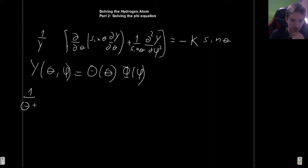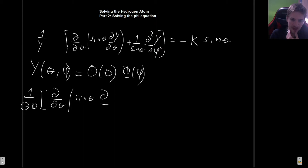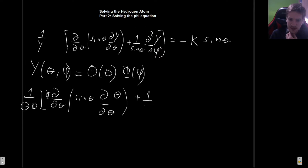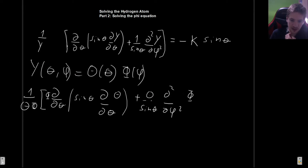So what we get is 1 divided by Theta·Phi — I'll leave the explicit dependence out to avoid cluttering the notation. The first term involves the derivative with respect to theta acting on Theta, since Phi does not depend on theta and can be pulled out front. The second term has 1 over sin(theta) times the second derivative with respect to phi acting on Phi, since Theta is constant from that perspective.